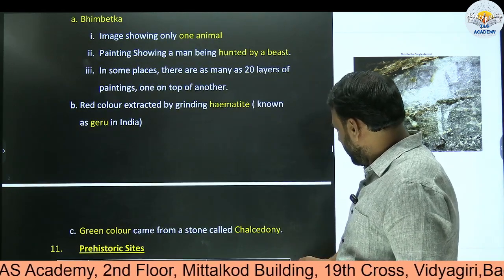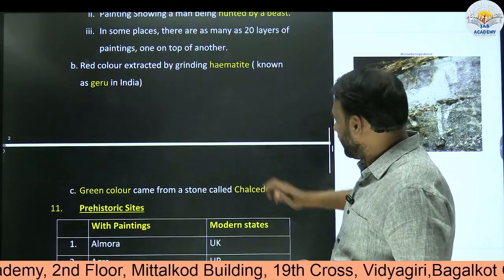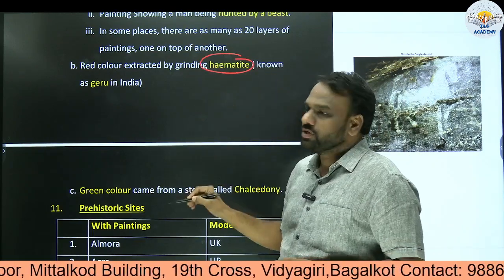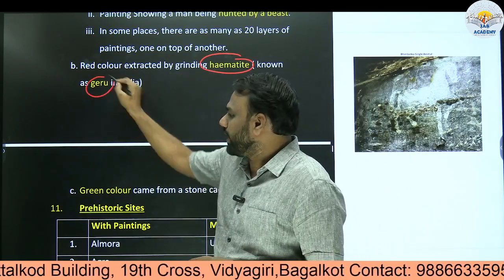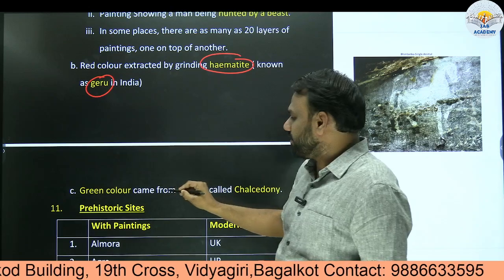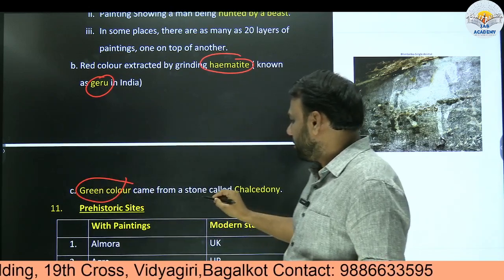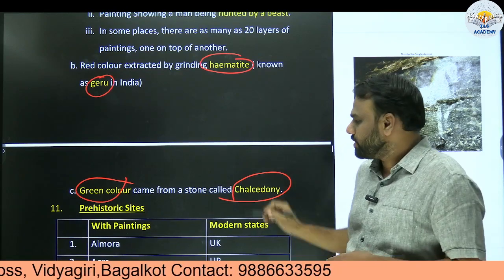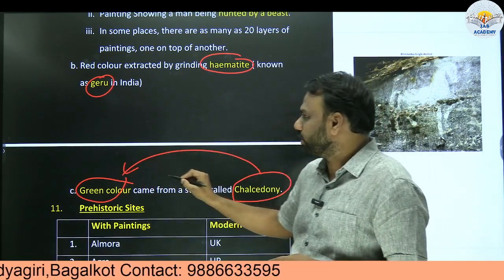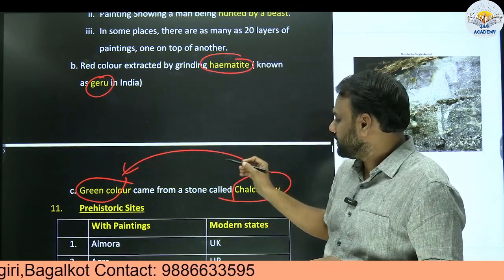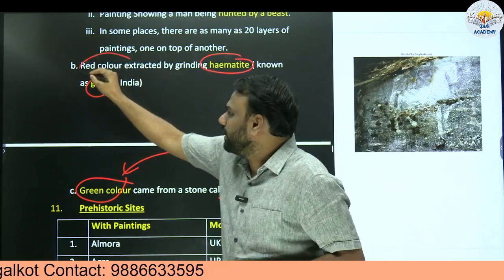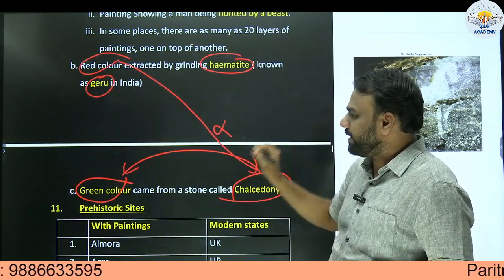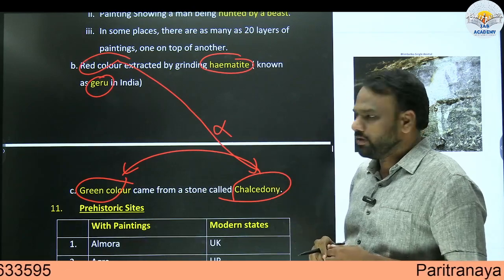For painting, red color was extracted by grinding hematite, which is also known as Geru in India. When it comes to green color, it was extracted from a stone called Chalcedony. This is very important to note - sometimes in order to confuse us they may mismatch, saying red color is extracted from Chalcedony. That is wrong. Red color is from hematite and green color is from Chalcedony.